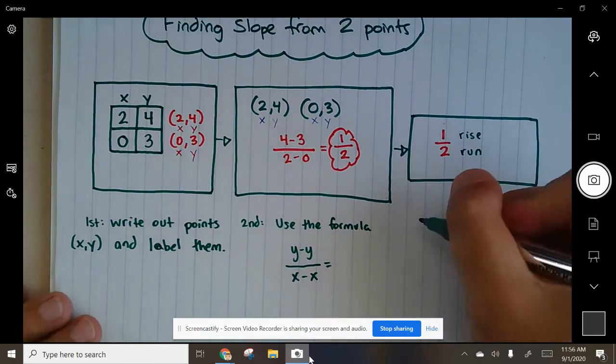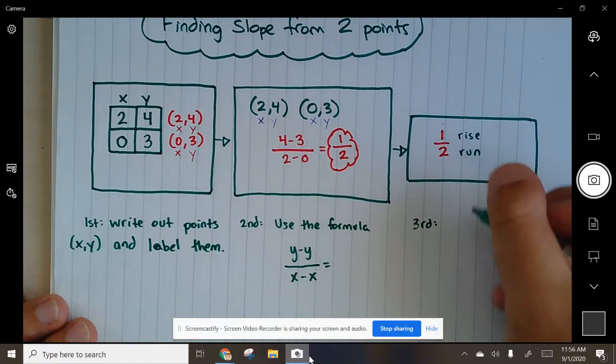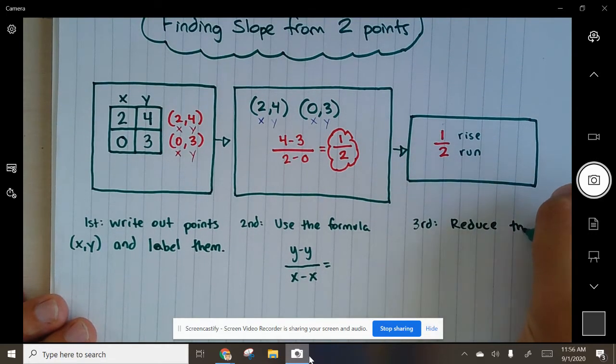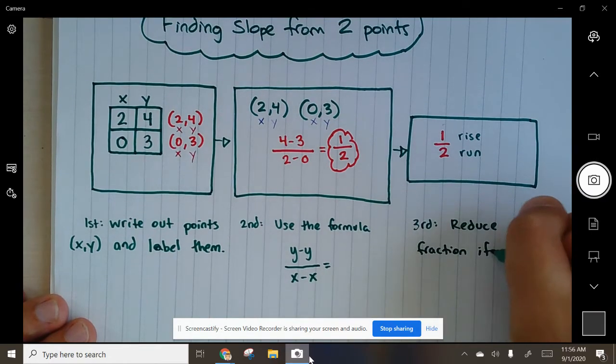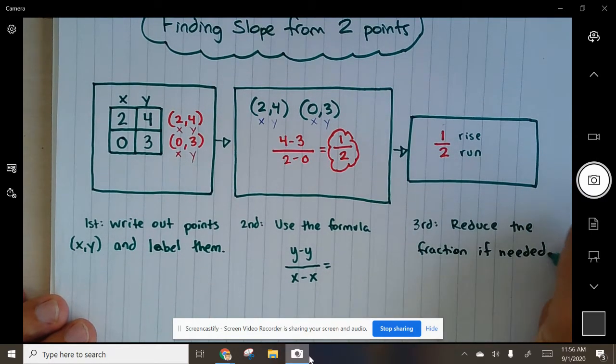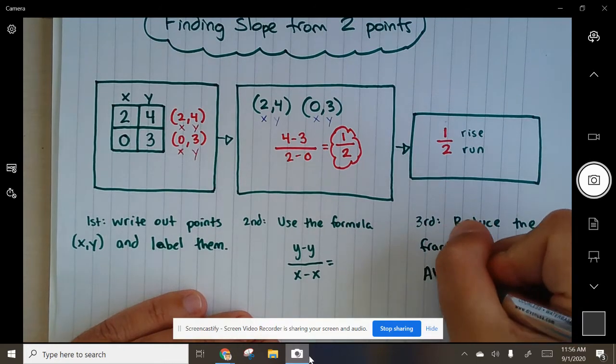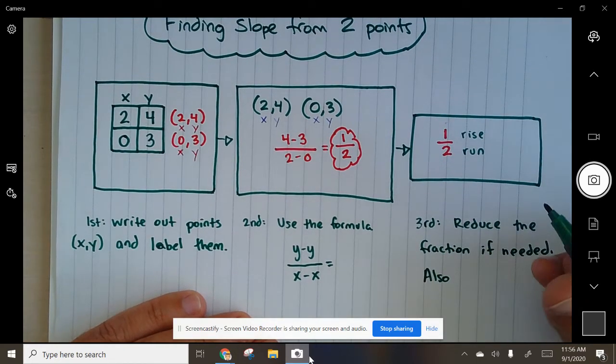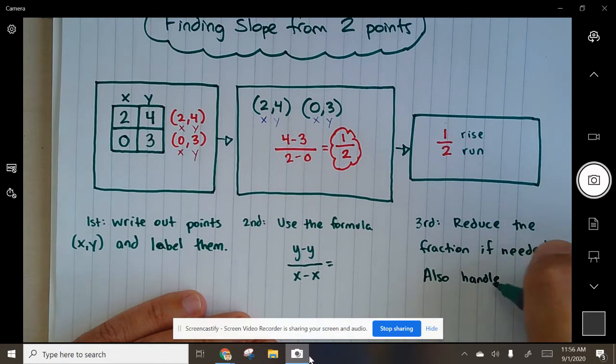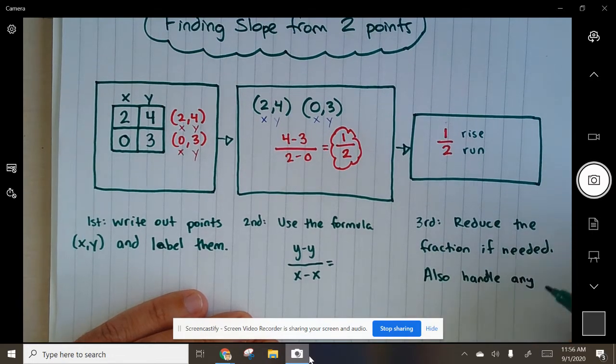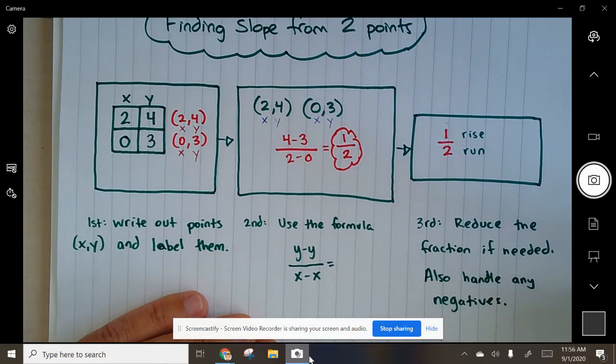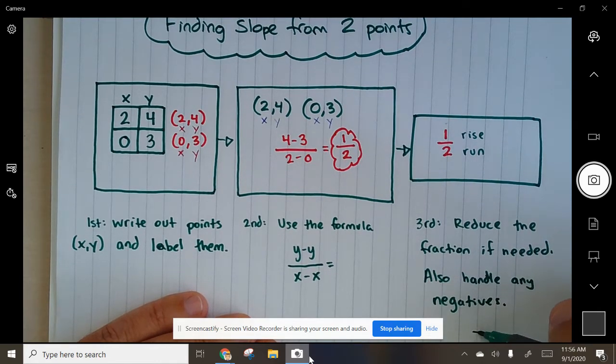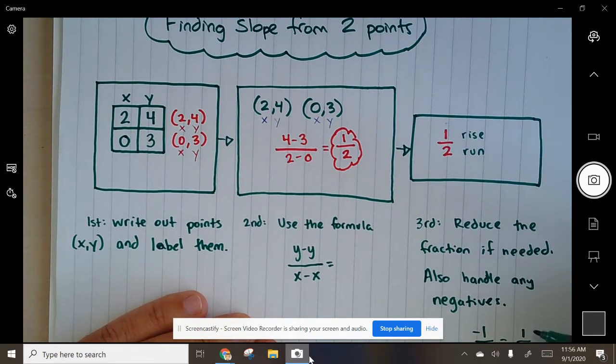This third box would be reduce the fraction if needed. Also handle any negatives. For example, what if it was negative 1 over negative 2? That would be 1 over 2.